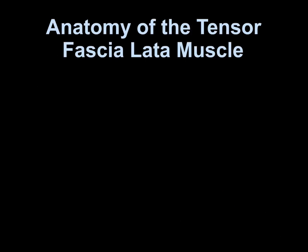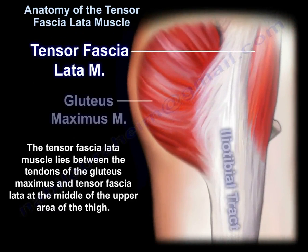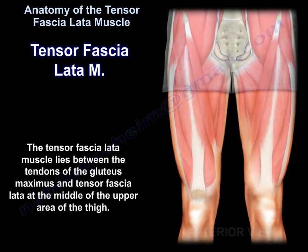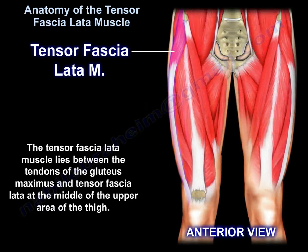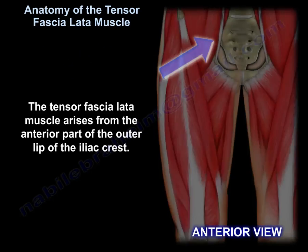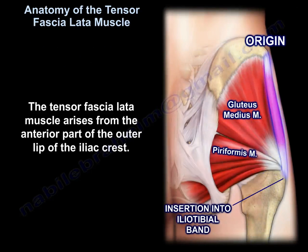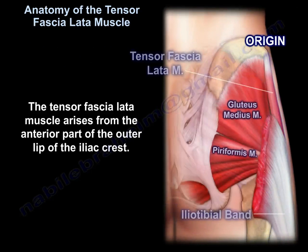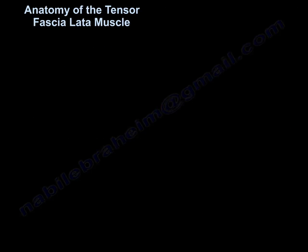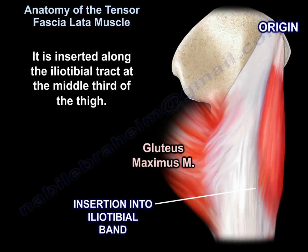Anatomy of the tensor fasciae latae muscle. The tensor fasciae latae muscle lies between the tendons of the gluteus maximus and tensor fasciae latae at the middle of the upper area of the thigh. It arises from the anterior part of the outer lip of the iliac crest. It is inserted along the iliotibial tract at the middle third of the thigh, into the iliotibial band.